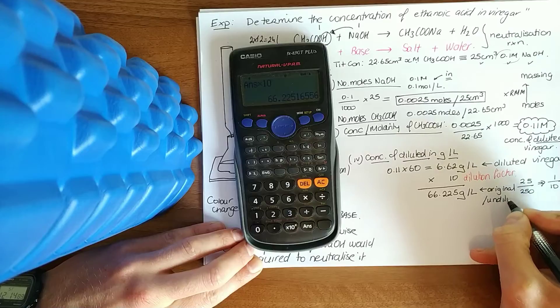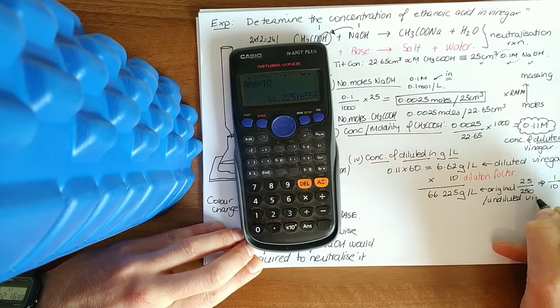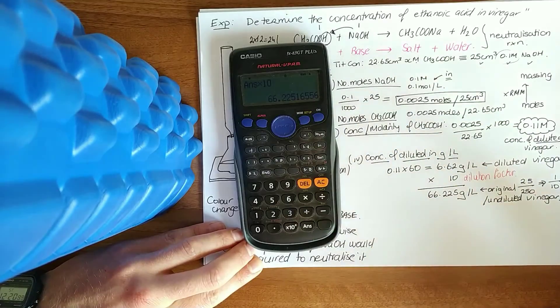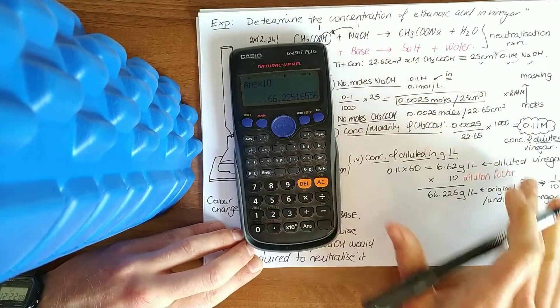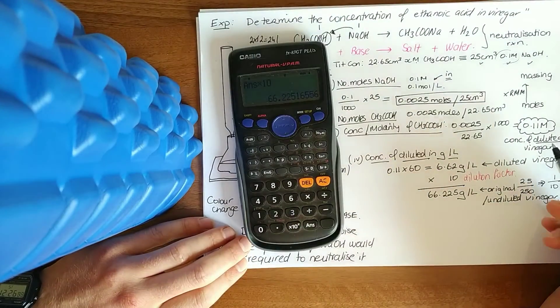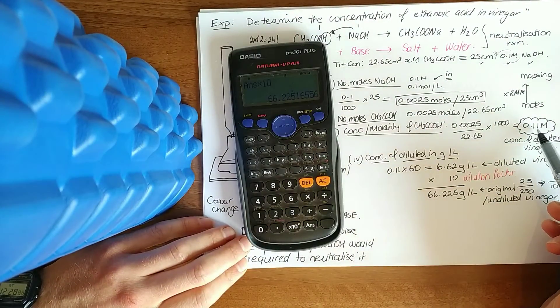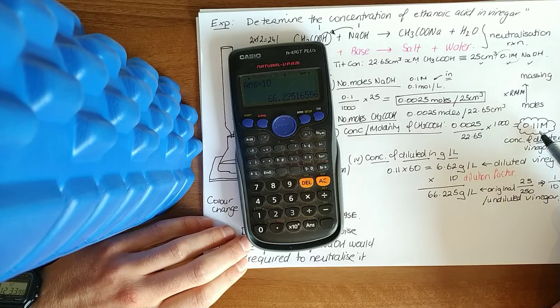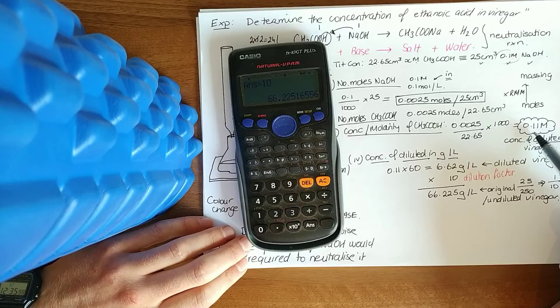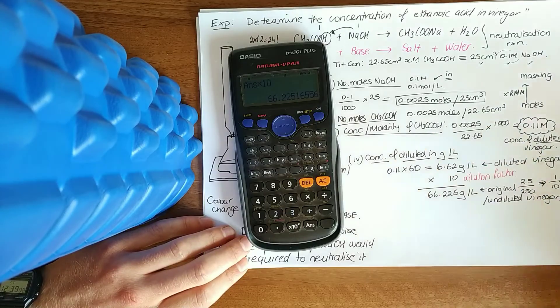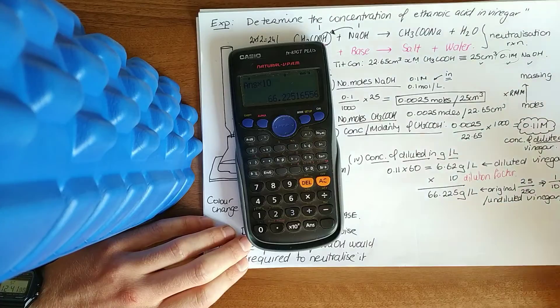Just never be put off by how the questions are phrased. The only thing you'll have to look at is the dilution factor, then you can just batter it on from the start. Sometimes you just got to be careful they might say the concentration of the original vinegar in moles per liter. You have to multiply that by 10 and you get 1.1, 1.1 moles per liter.